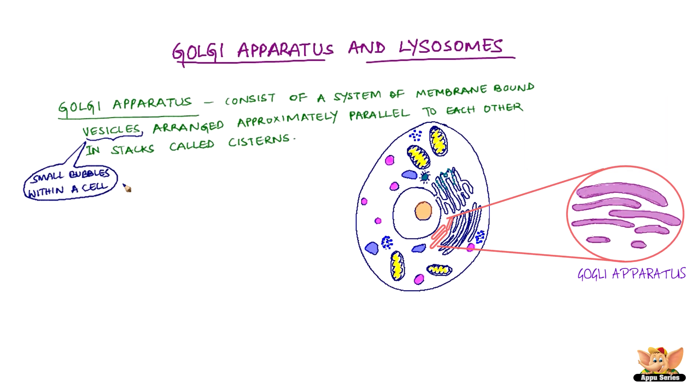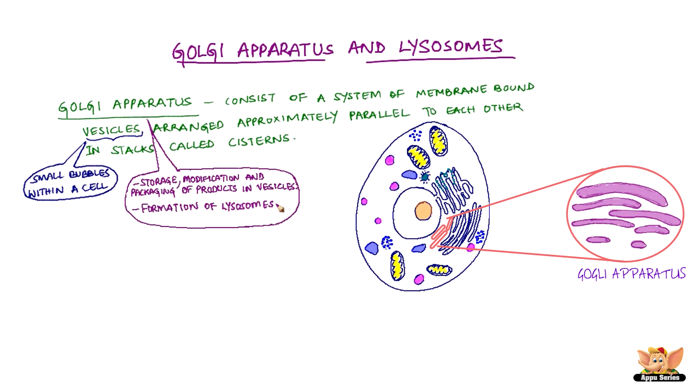The membranes of the Golgi apparatus have connections with the membranes of the endoplasmic reticulum. The Golgi apparatus helps in storage, modification, and packaging of products in vesicles, and is involved in the formation of lysosomes.